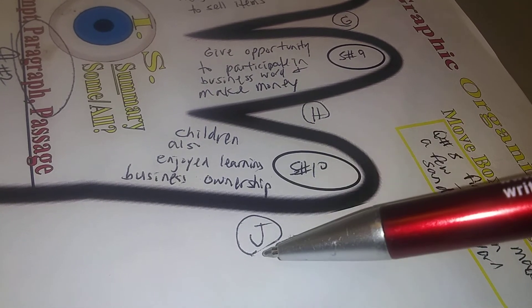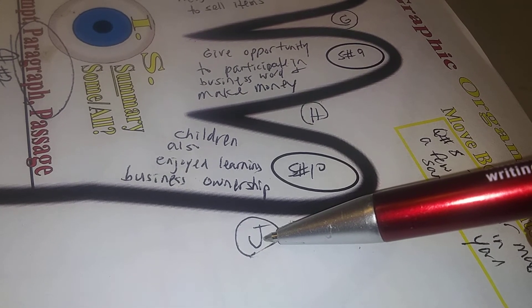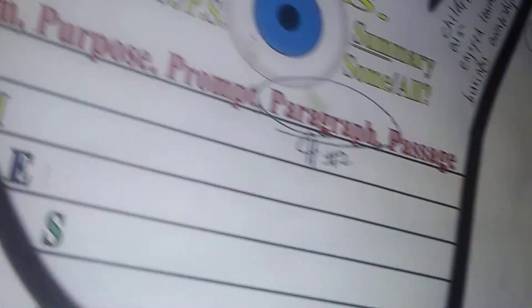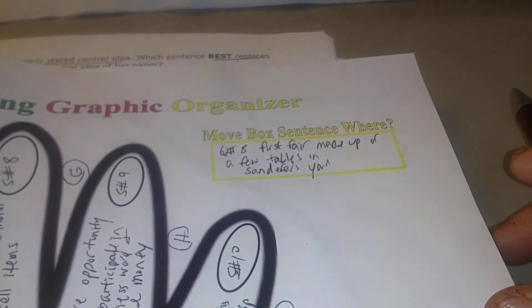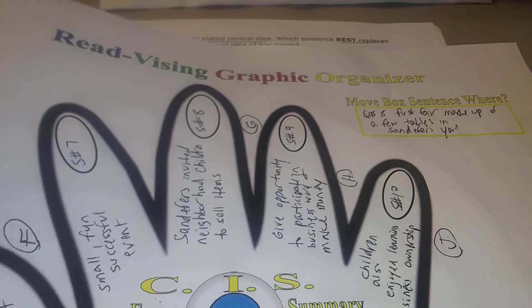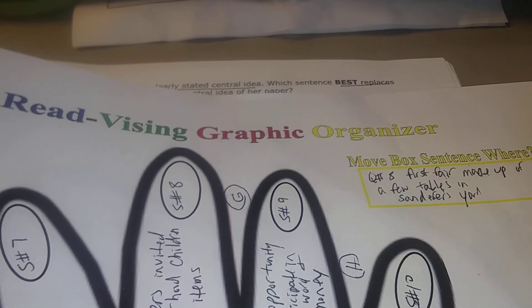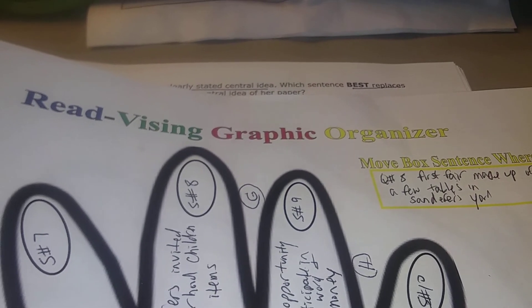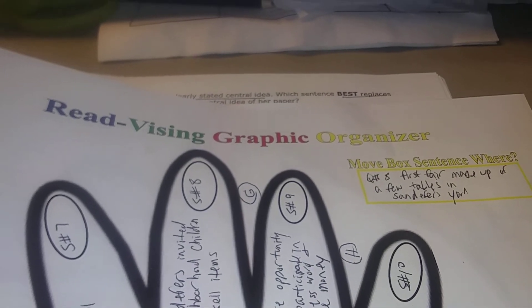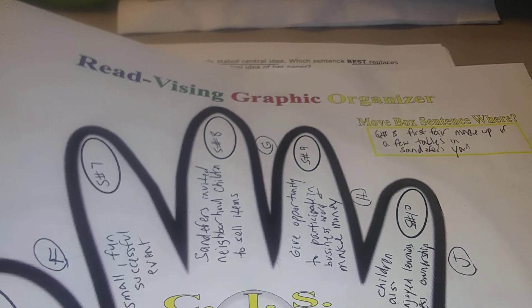Talking about setting up a few tables in their backyard after the paragraph is done wouldn't make sense. So that's how I would recommend teaching your kids how to move a box sentence to a proper place in a paragraph. God bless! I'm going to place a link so you can get a copy of this graphic organizer — I have it on sale for only a dollar until the end of May. God bless you guys!